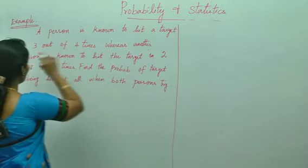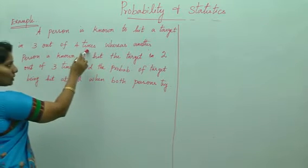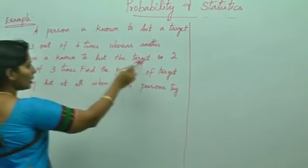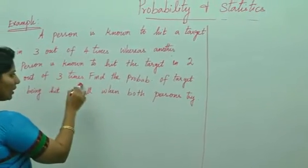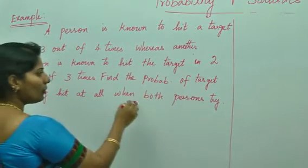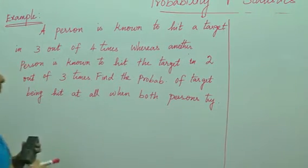A person is known to hit a target in 3 out of 4 times whereas another person is known to hit the target in 2 out of 3 times. Find the probability of target being hit at all when both the persons strike.